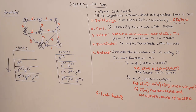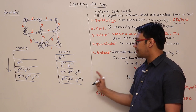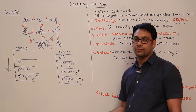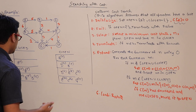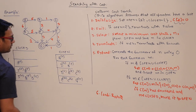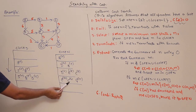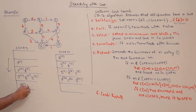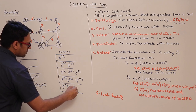G is added to open with cost 6 + 5 = 11. G is a goal state, but we still do not stop here because a better path to G might be found later. We go back to step 2, and the minimum cost state is now C with cost 6, so we put C into closed.